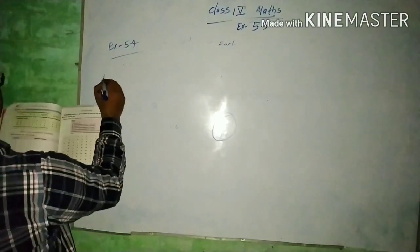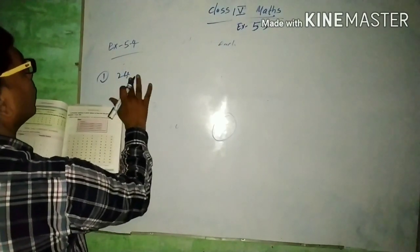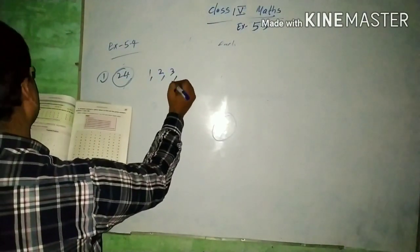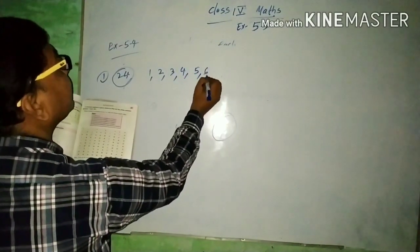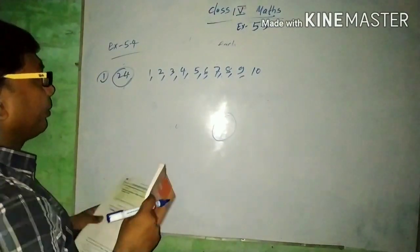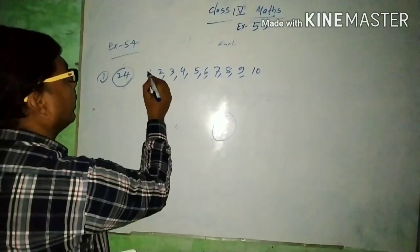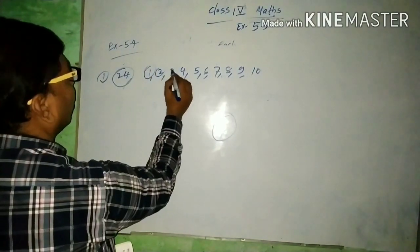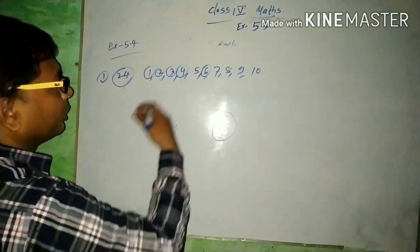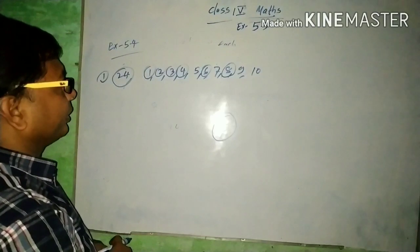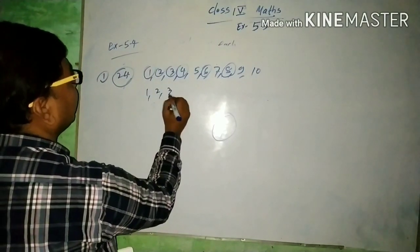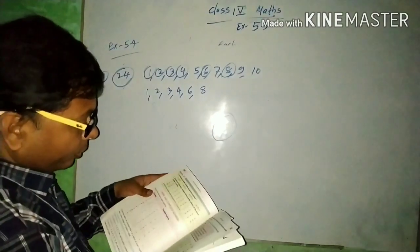Next, it is asked: for 24, which of the given numbers are factors? You need to identify and circle the factors of 24. For instance, 1, 2, and 3 are all factors of 24, and you check each option to see which ones divide 24 exactly.